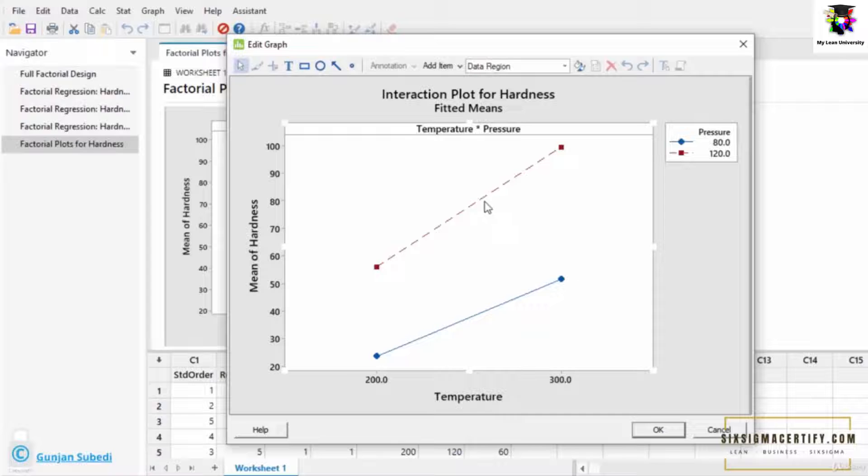There is some interaction, but the interaction of the temperature and pressure is not so significant. Suppose if this red line goes on increasing and this blue line goes on increasing over infinity, they would meet at some point. But this interaction is not significant over the given range of the temperature and pressure.